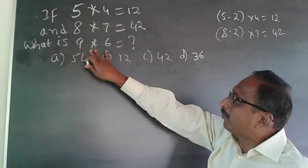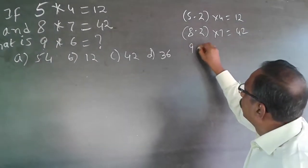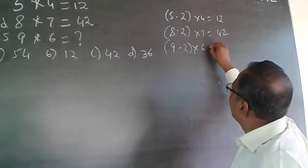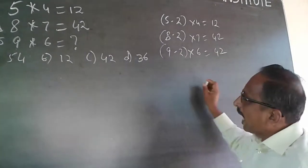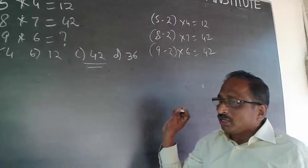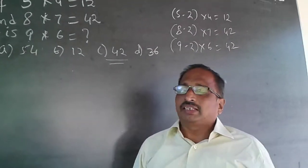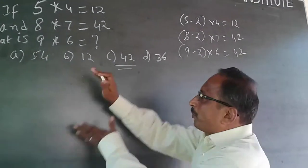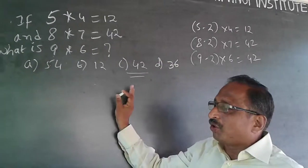Apply the same logic: 9 minus 2 into 6 will be 42. So the answer is 42.